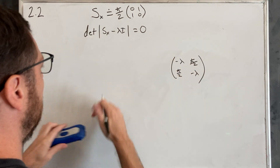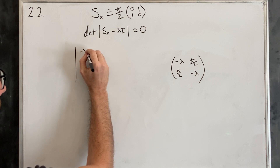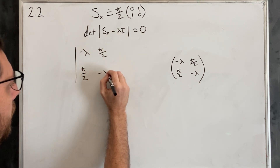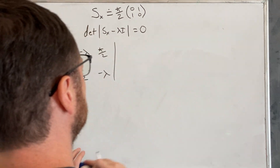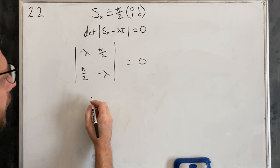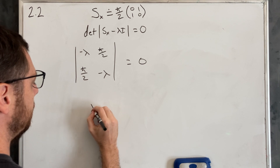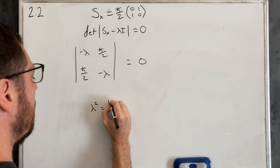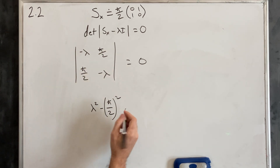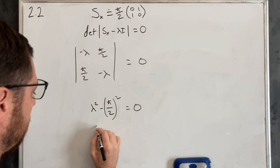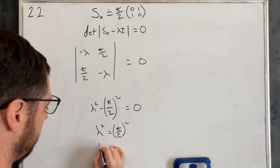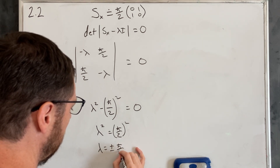We just have to solve for lambda. Rewriting, we take the determinant of the matrix [-λ, ℏ/2; ℏ/2, -λ] equals 0. Taking the determinant: (-λ)(-λ) minus (ℏ/2)(ℏ/2) equals 0, so λ² minus (ℏ/2)² equals 0. That means λ² equals (ℏ/2)².